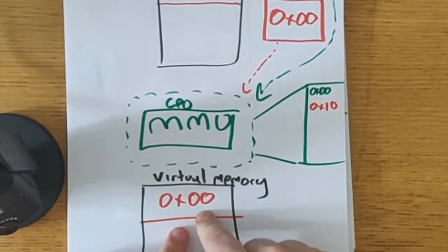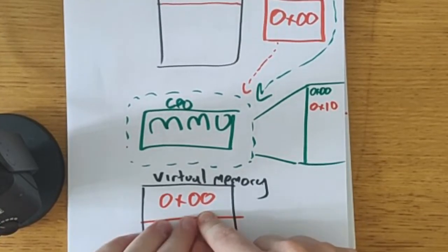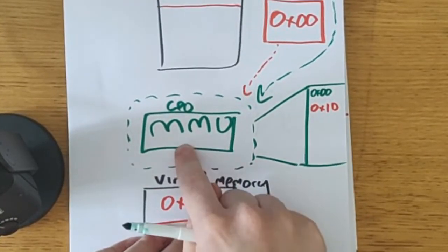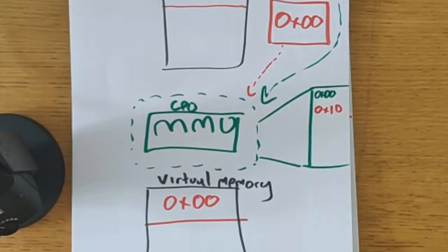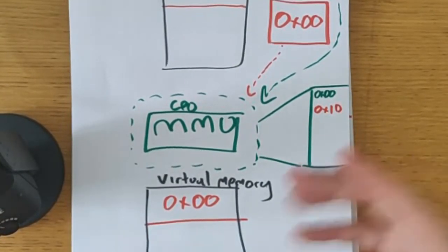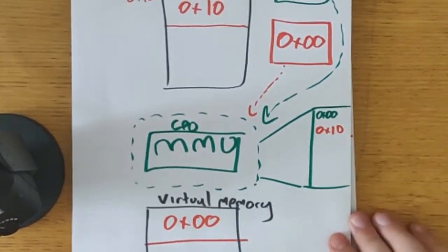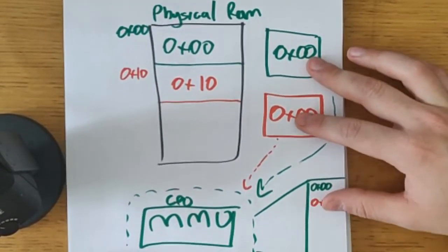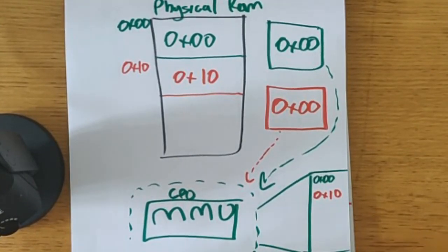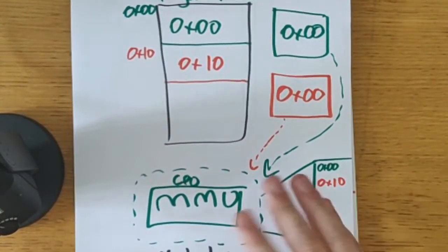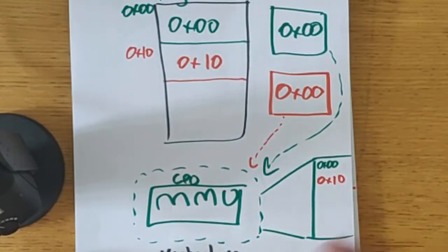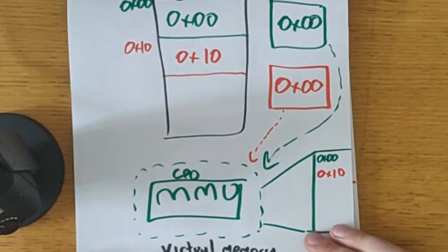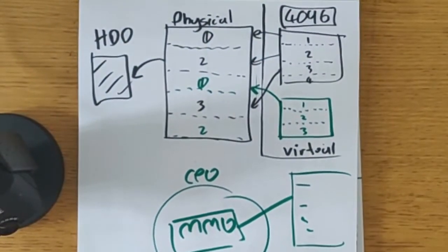The red process wants to be at 0x00, but the MMU says it's going to put it at 0x10 in physical RAM. The other process goes at 0x00 in physical memory. The important bit is that the process itself still thinks it's at 0x00 — not where it really is in physical RAM. This translation from physical memory to virtual memory is done by the MMU in the CPU, and it's far more complicated, but that's the basic concept.